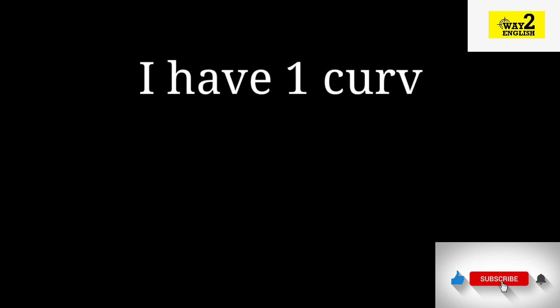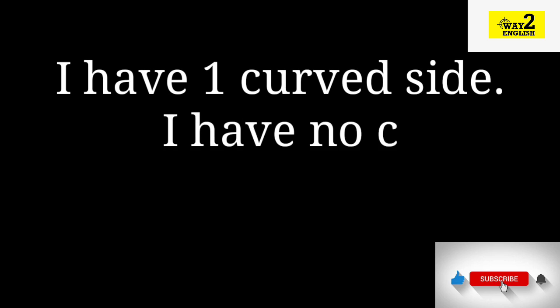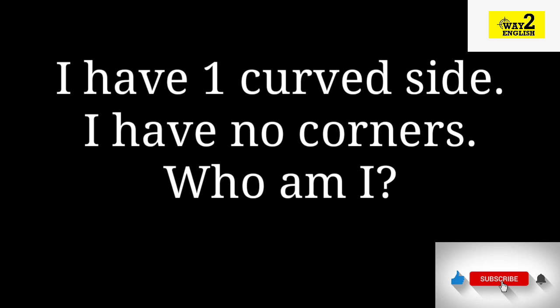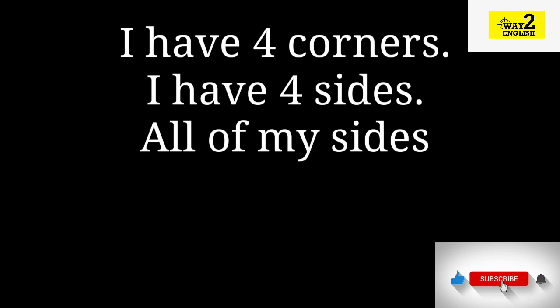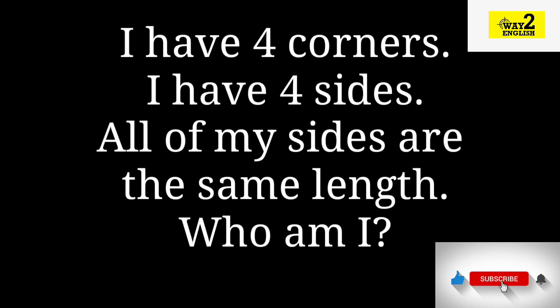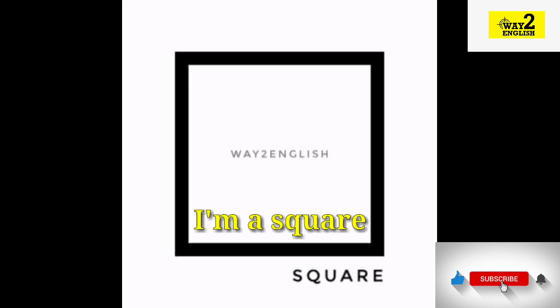I have one curved side. I have no corners. Who am I? I am a circle. I have four corners. I have four sides. All of my sides are the same length. Who am I? I am a square.